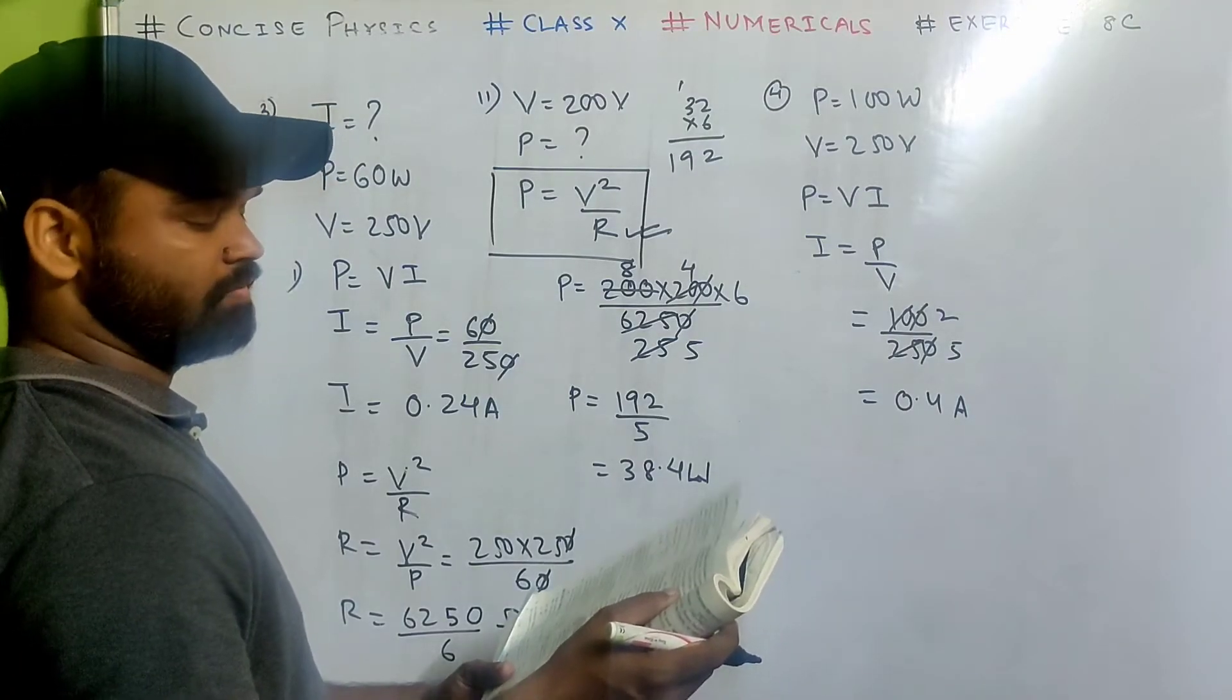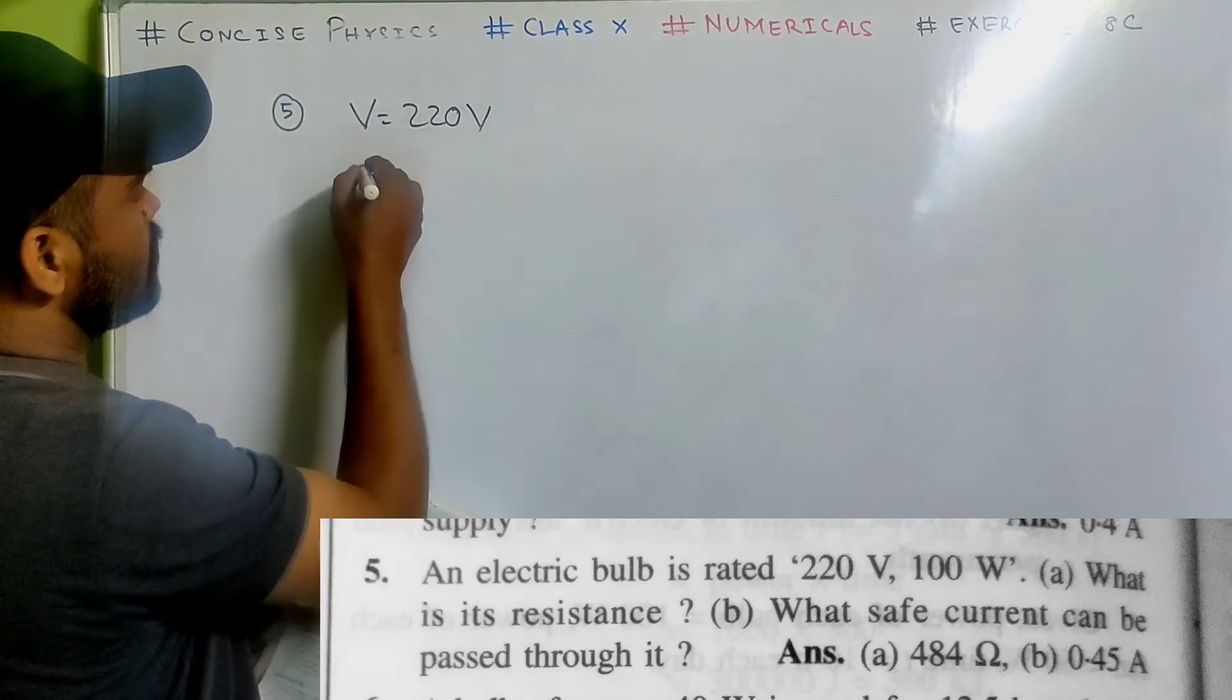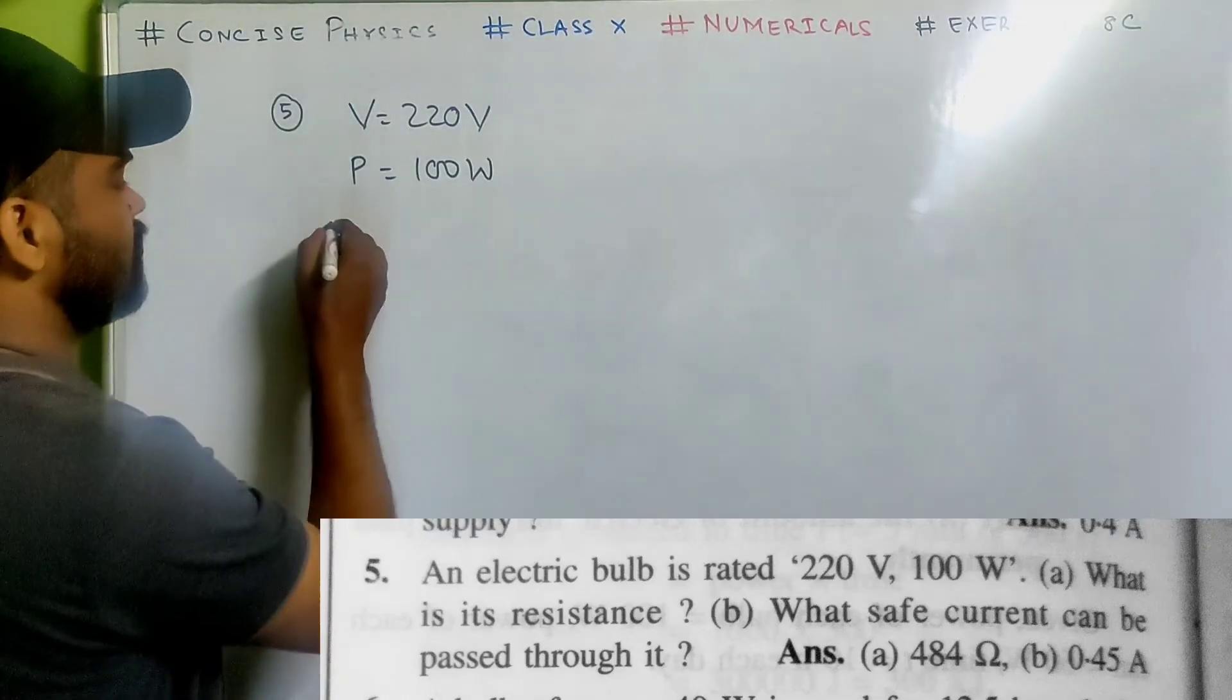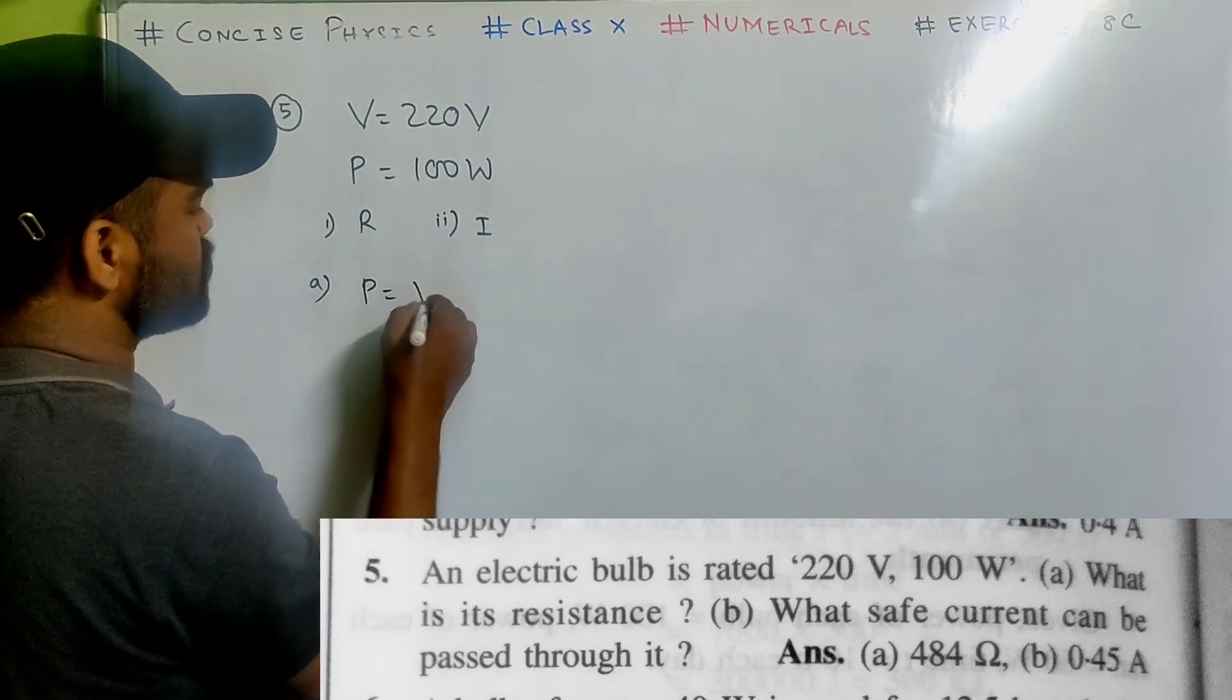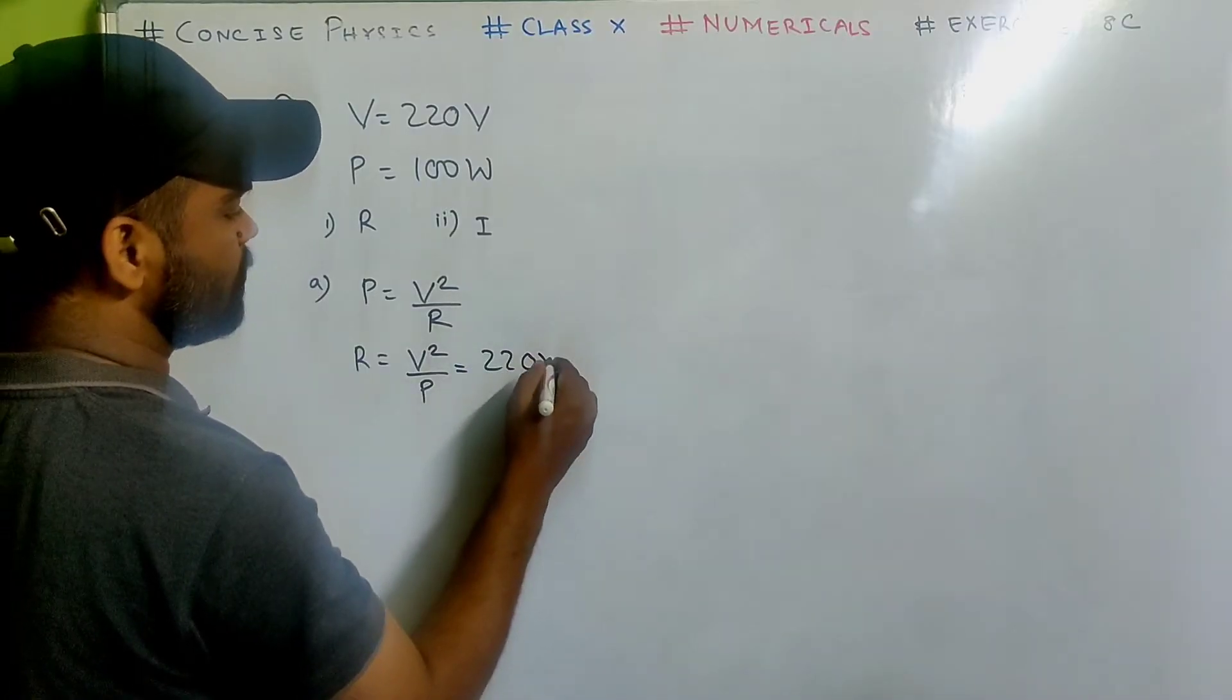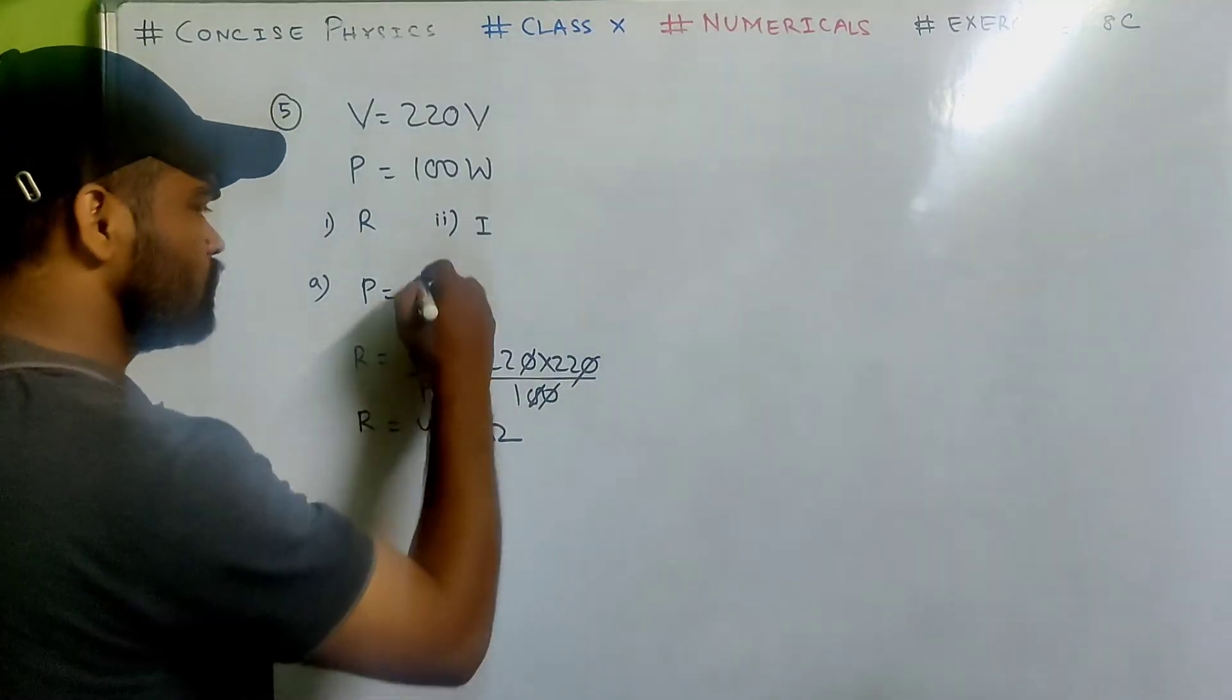Now let us look at number 5. An electric bulb is rated 220 volt and 100 watt. What is its resistance? What safe current can be passed through it? First they've asked for resistance. We have the concept power equals to v square by r. Use this formula. So r equals to v square by p. Substitute the value 220 multiplied by 220 by 100. So resistance is 484 ohm.